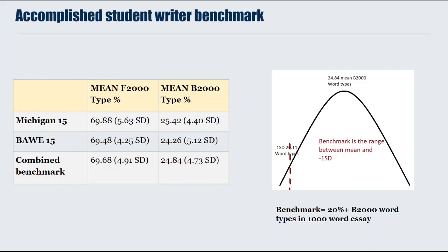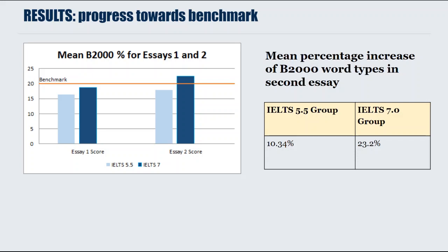So the results: the paler column is the lower group, IELTS 5.5; the darker column is IELTS 7. At the beginning of the year there wasn't much difference — about just under 2%, around 16.5 and 18.5 — in word types beyond 2000. But by the end of the year there was a bigger difference. Almost all the IELTS 7 students had gotten beyond the benchmark, right into the heartland of the benchmark, whereas the IELTS 5.5 students had not. The increase in word types beyond 2000 was much less for the lower group than for the higher group.